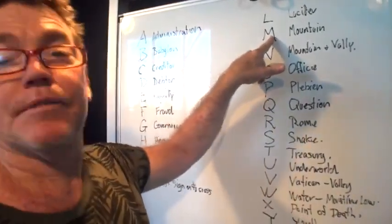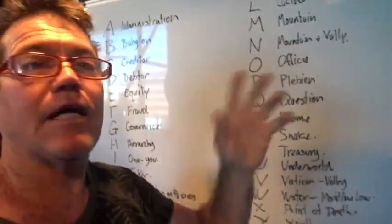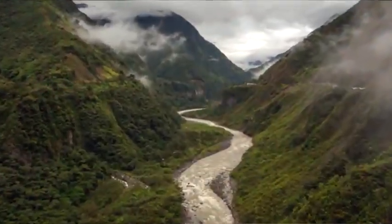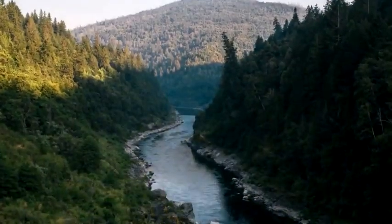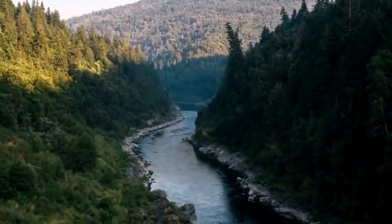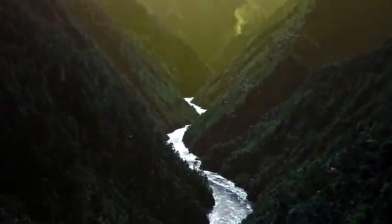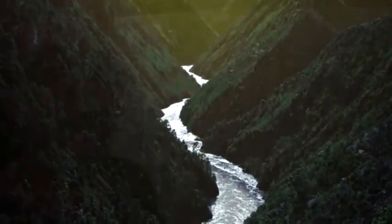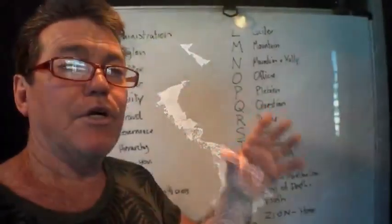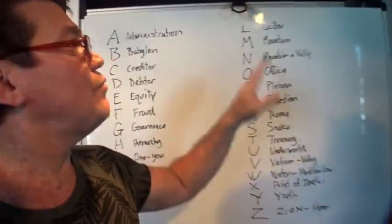M — of course, mountain. M deals with the mountains and valleys. The mountains direct the valleys — wherever the mountains are, the valleys are where the water flows, where the current flows. The flow of energy flows in the valleys, which are the banks. The direction of the valleys is really where the mountains are because water can only flow through the valleys.